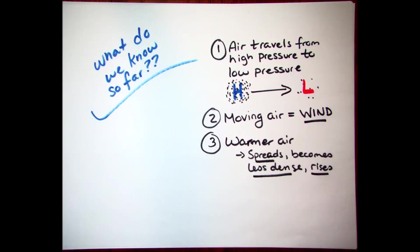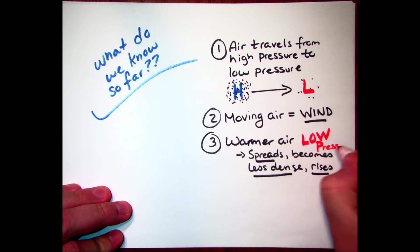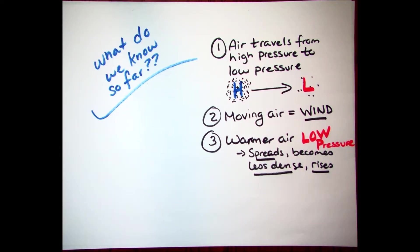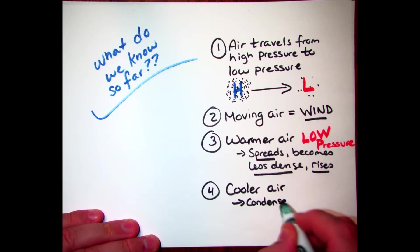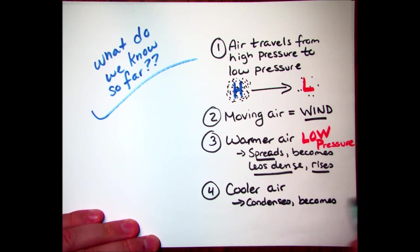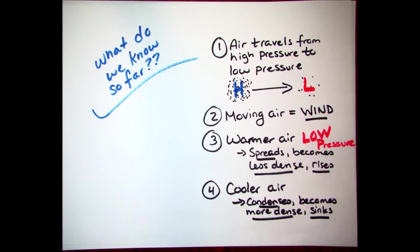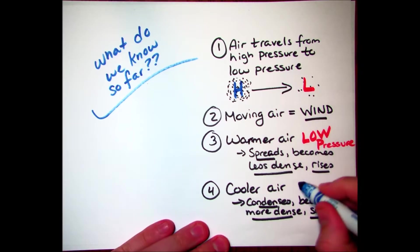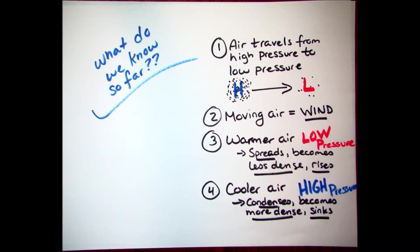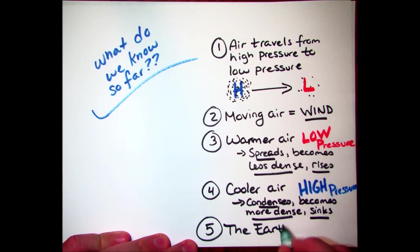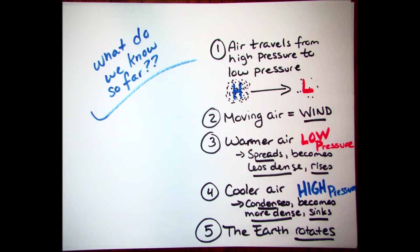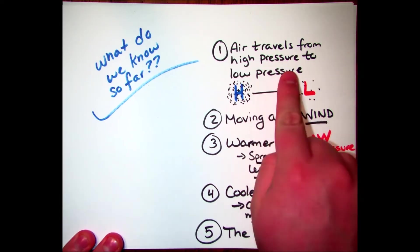Rising, spreading air is at low pressure. Cooler air, or air that's cooling, condenses and becomes more dense — it sinks, and that is high pressure. More air means high pressure, less air means low pressure. We also know that the Earth rotates.